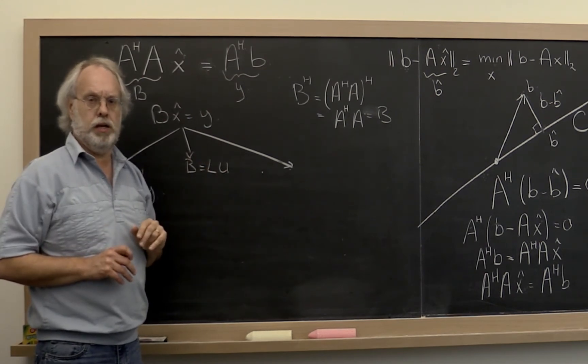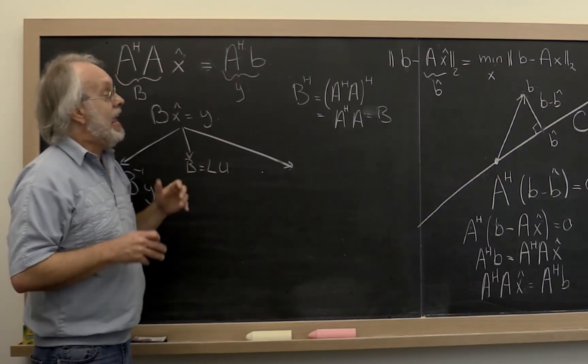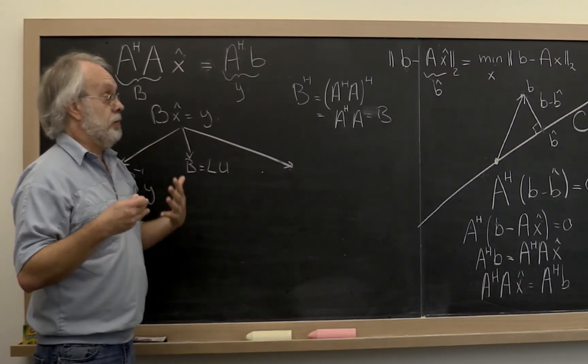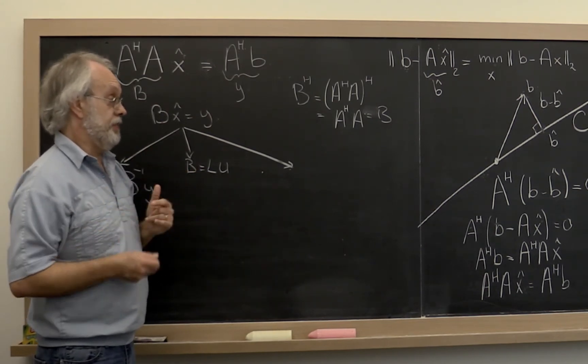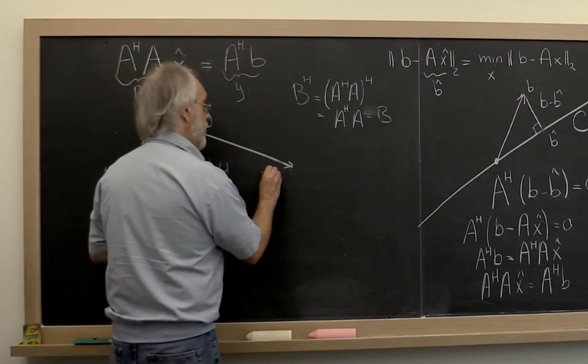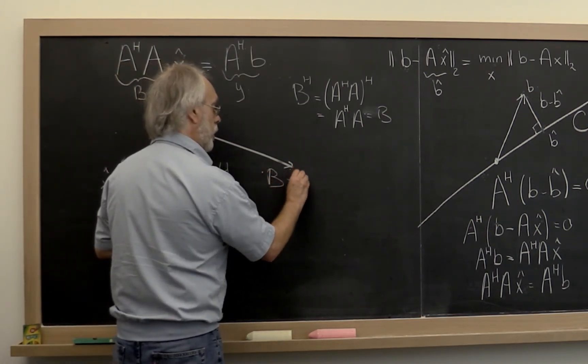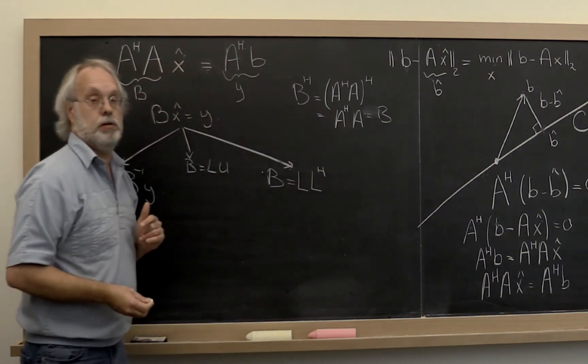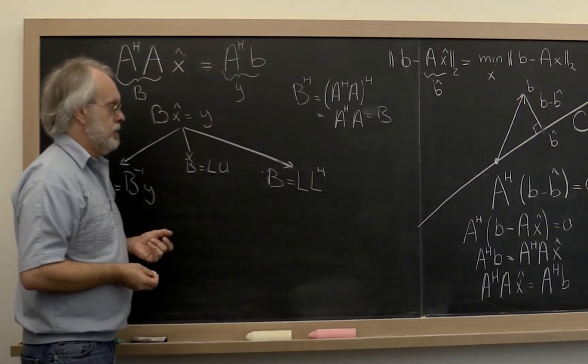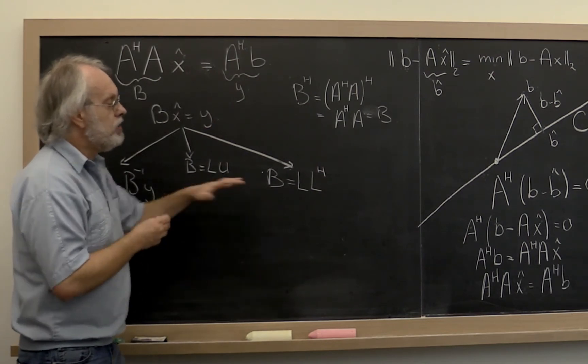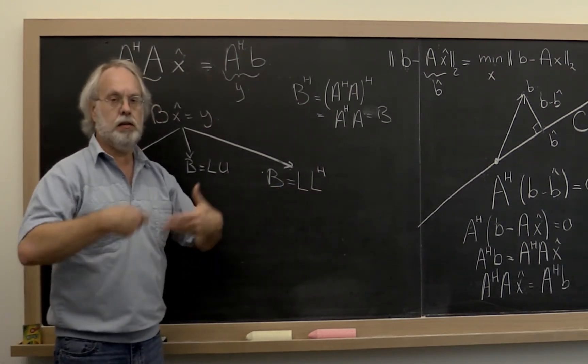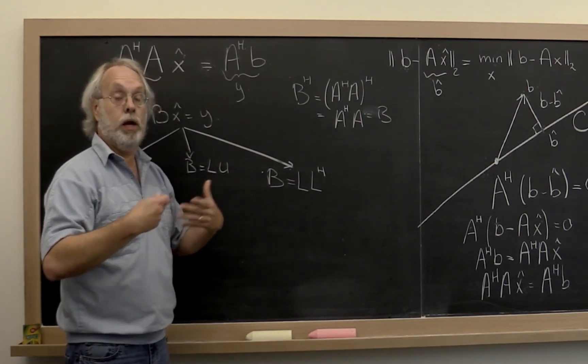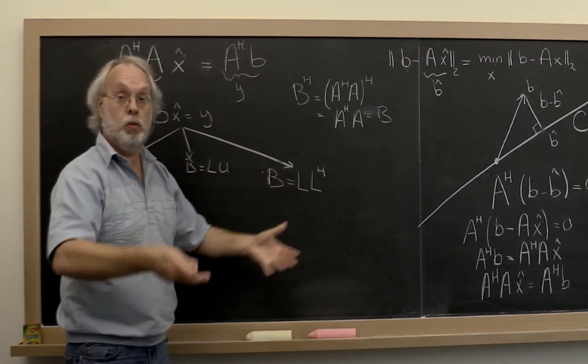If a matrix is symmetric positive definite, or Hermitian positive definite in this case, then you can actually factor it into a lower triangular matrix times its Hermitian transpose. And how does that help us? We're going to see how to compute that in a future week. But let's just say that we know how to do this. What do we do with the result?